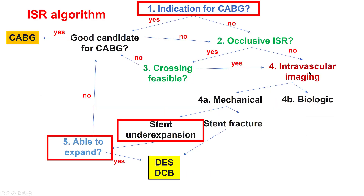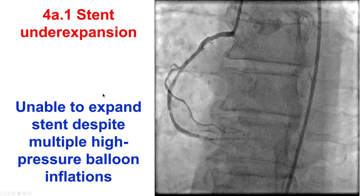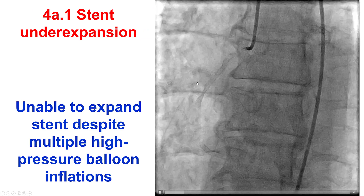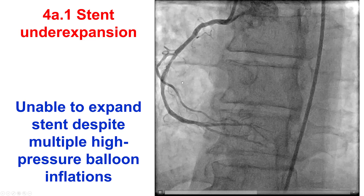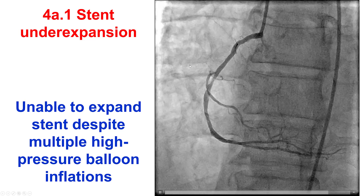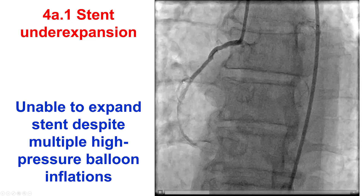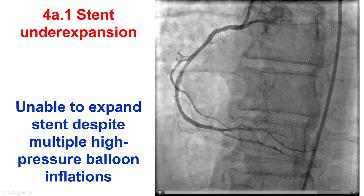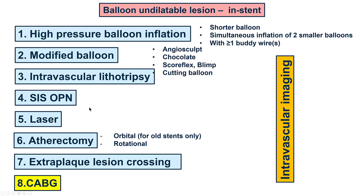Based on intravascular imaging, the question is about the mechanism. If it is a mechanical problem, it can be stent under-expansion or stent fracture. If it is stent under-expansion, the next question is whether the stent can be expanded. This is an example of an under-expanded mid-RCA stent. Even angiographically, we can see that the stent is not well expanded in this segment. This is the algorithm for in-stent balloon-dilatable lesions.